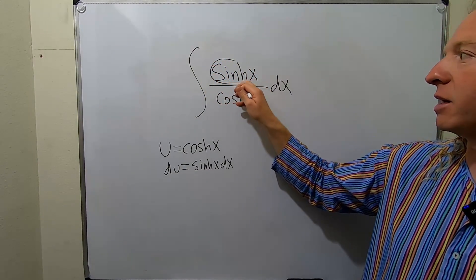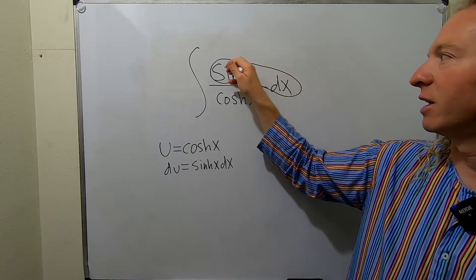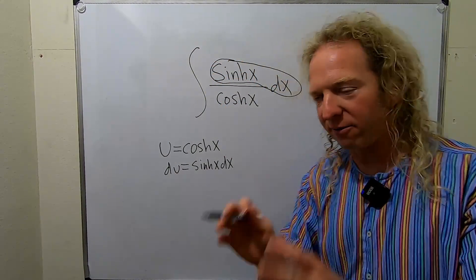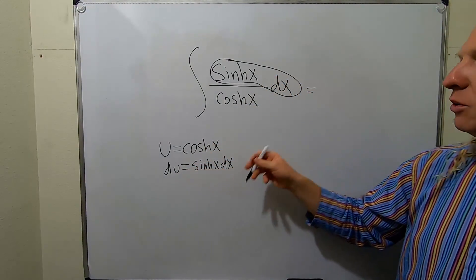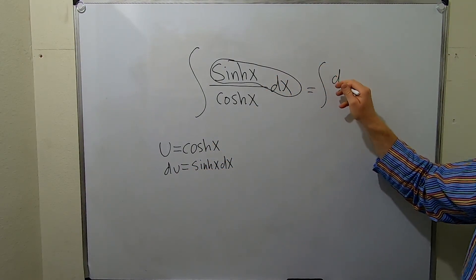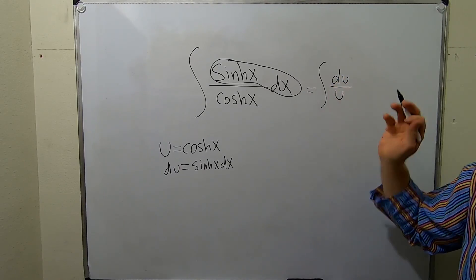Sometimes things in mathematics just work themselves out, and this is an example of that. Because this piece up here is simply du, we end up with du over u.